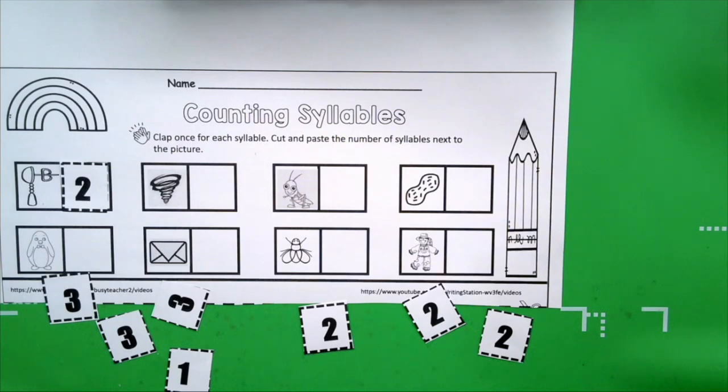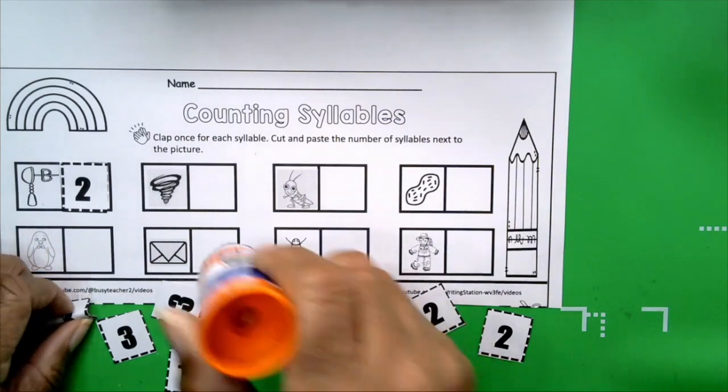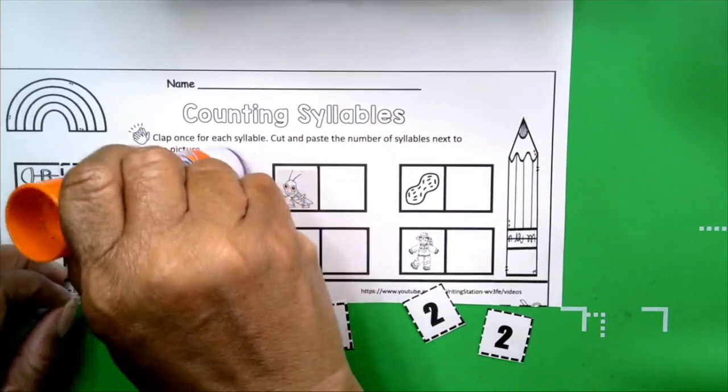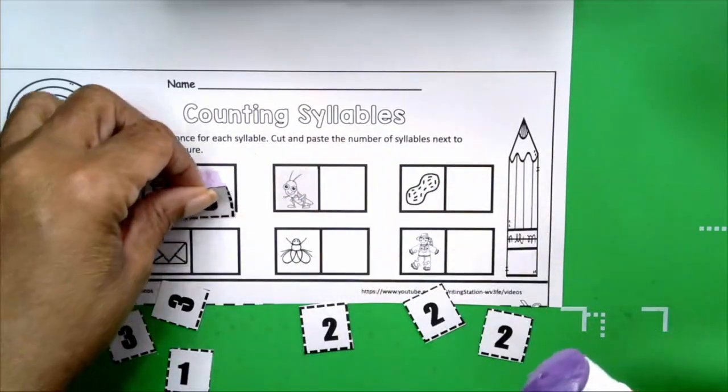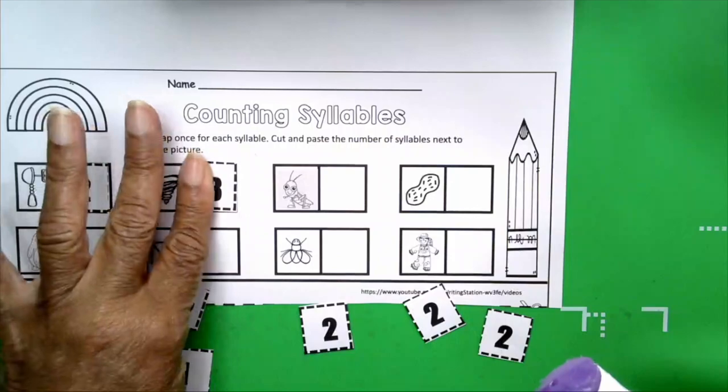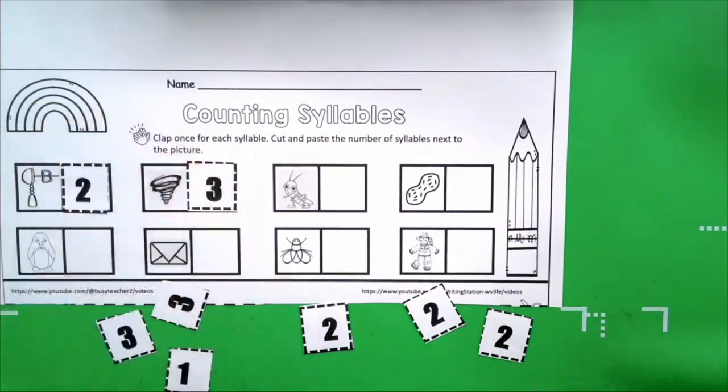Okay, let's try the next picture. Volcano. Ooh, that's a big one. Volcano. How many claps did you hear? Three. How many syllables are in the word volcano? Three. Very good. Take your number three and your glue stick. Give it a swirl. And we're going to glue the number three next to the volcano. Volcano has three syllables.